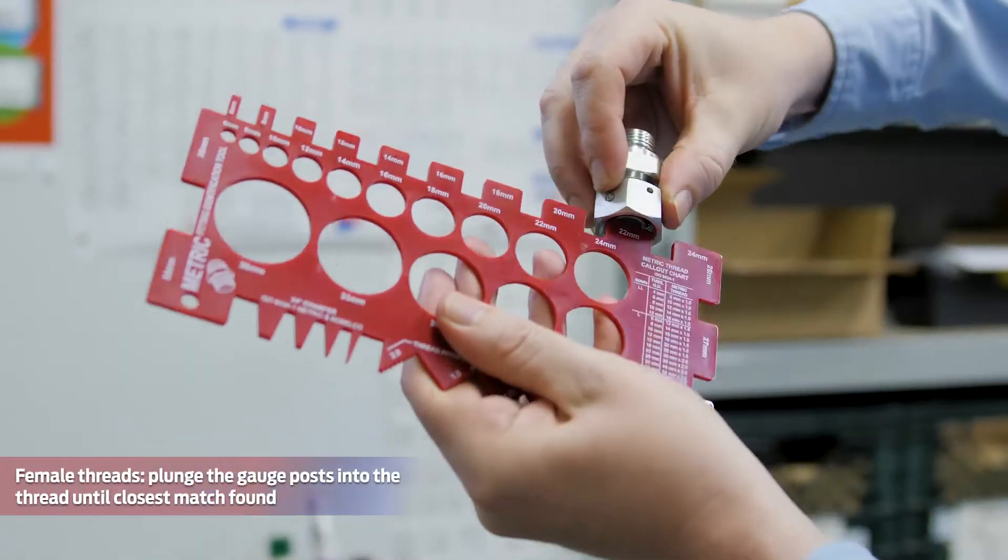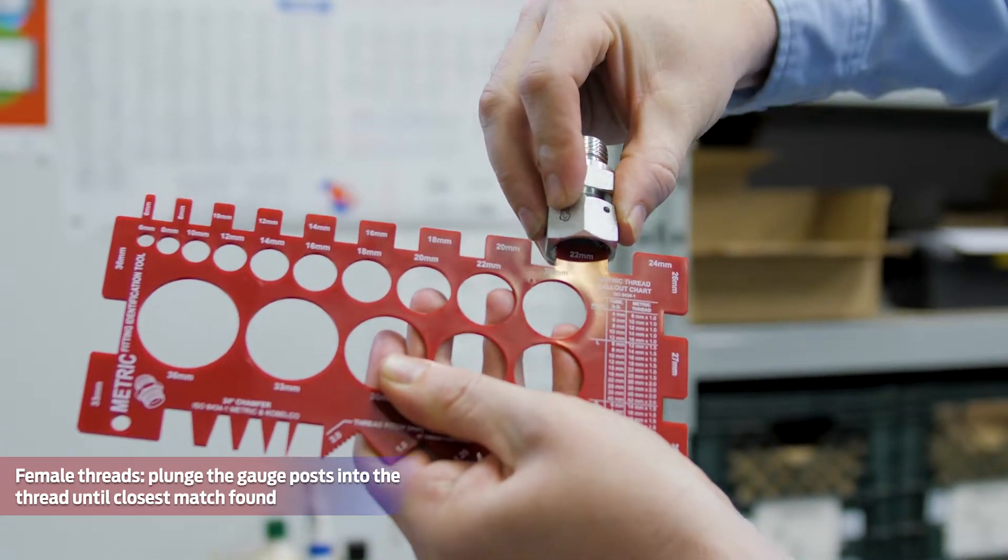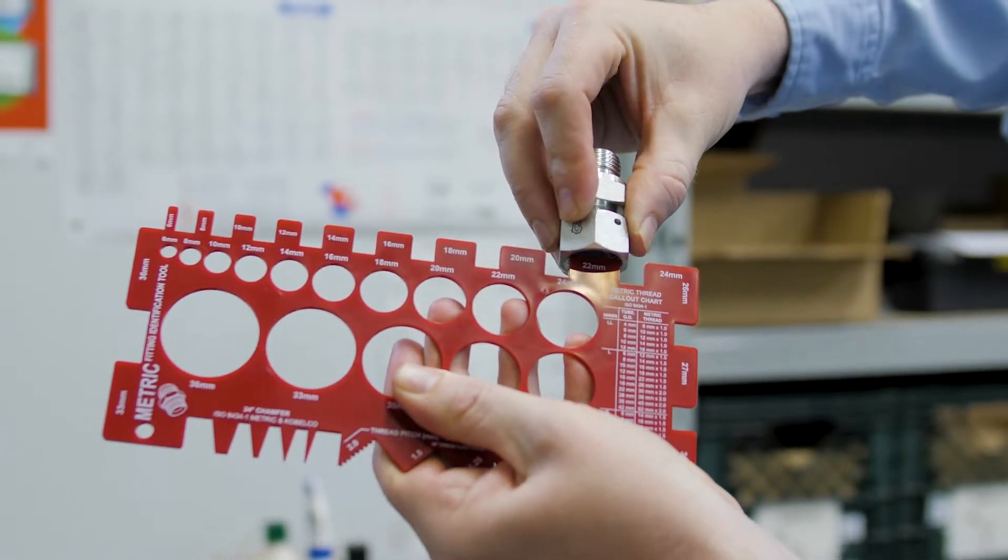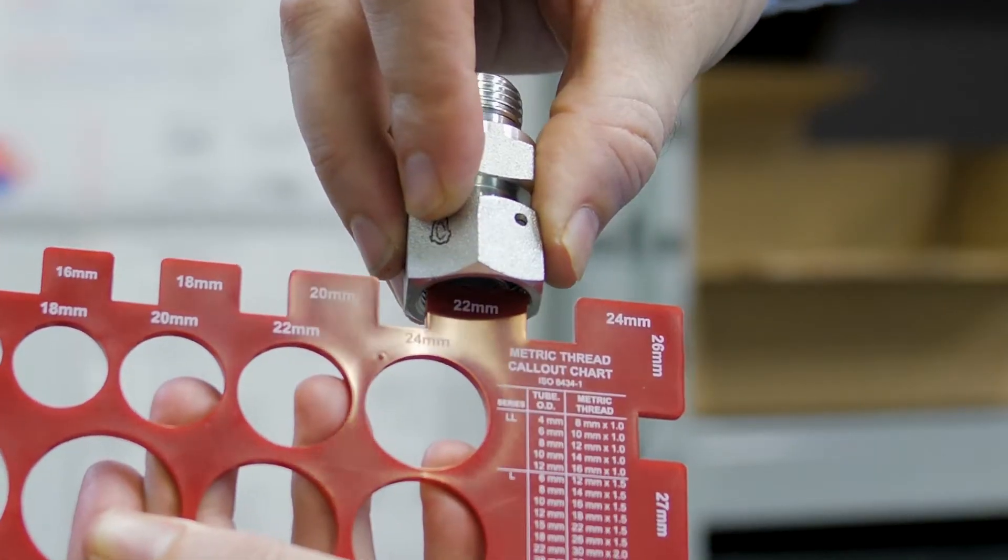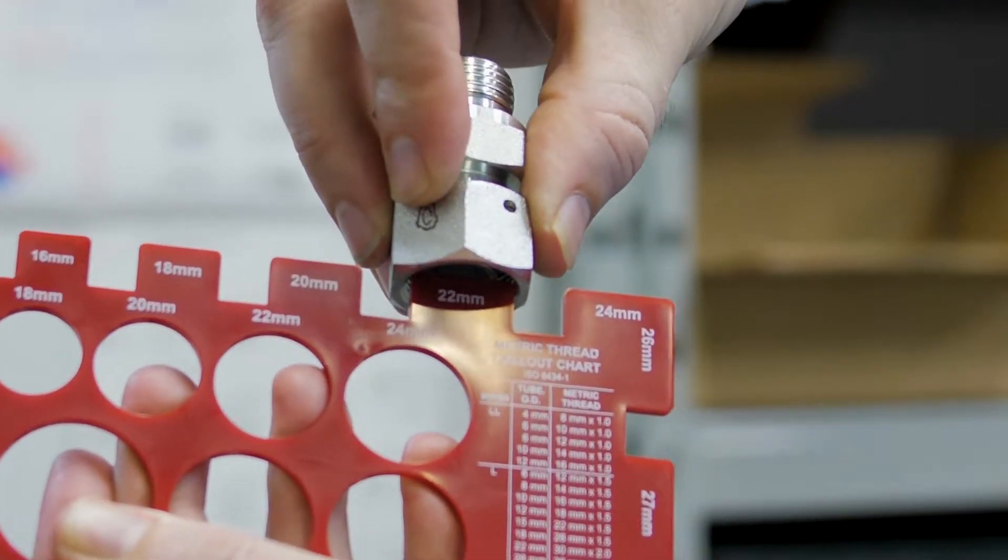For female threads, plunge the gauge posts into the female thread for closest match. In both cases of male and female threads, the gauge should be lightly snugged to indicate a match.